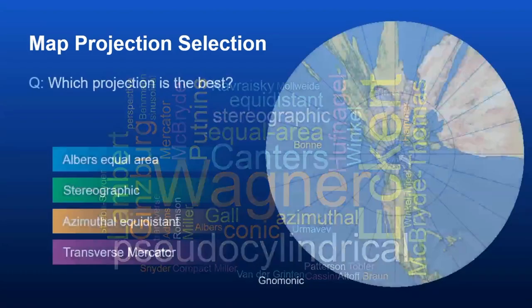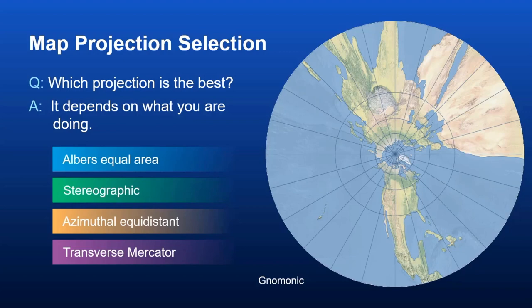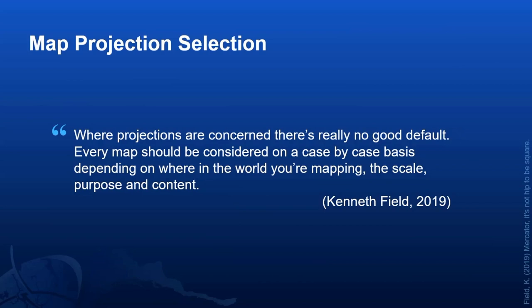Thank you, Bojan. This part of the presentation will talk about how to decide what projection you should select. We've been telling you not to use Web Mercator — so how do you decide what else to use instead? Which projection is the best? There are several options: Albers equal area, stereographic, azimuthal equidistant, transverse Mercator, and the mnemonic projection. Well, it depends on what you're doing and what is your purpose for the map. As Kenneth Field commented, where projections are concerned there's really no good default. Every map should be considered on a case-by-case basis, depending on where in the world you're mapping, the scale, purpose, and content.